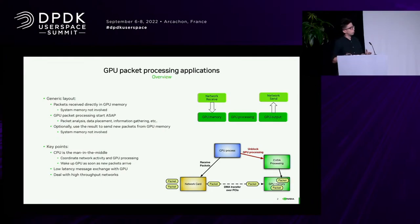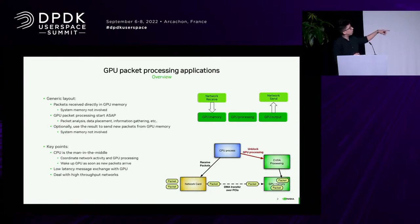You need to create a pipeline where packets come in from the network interface, they flow directly into the GPU memory — so directly from the network card into the GPU memory. Once packets reach the GPU memory, the GPU processing wakes up somehow and basically produces some output.